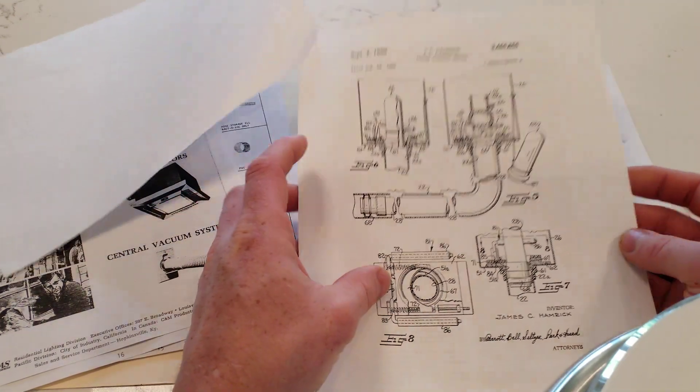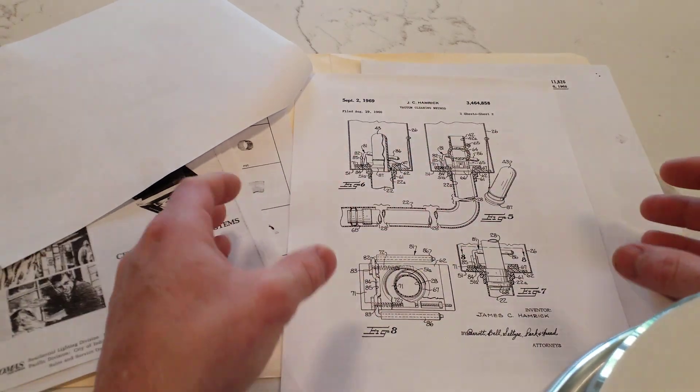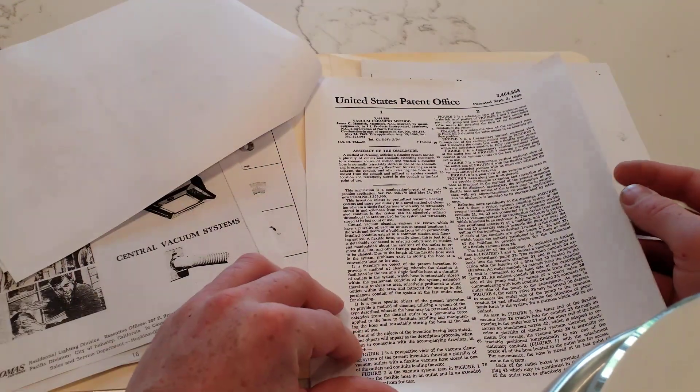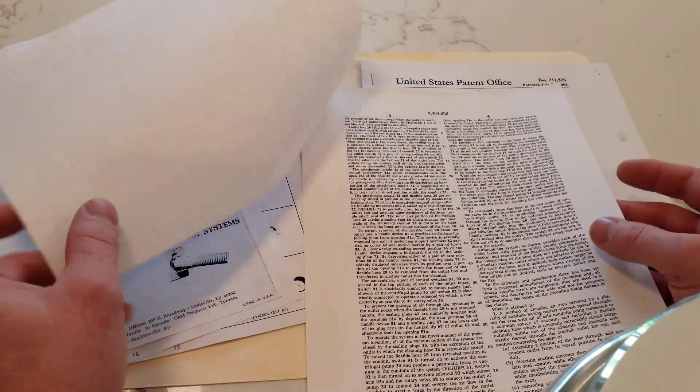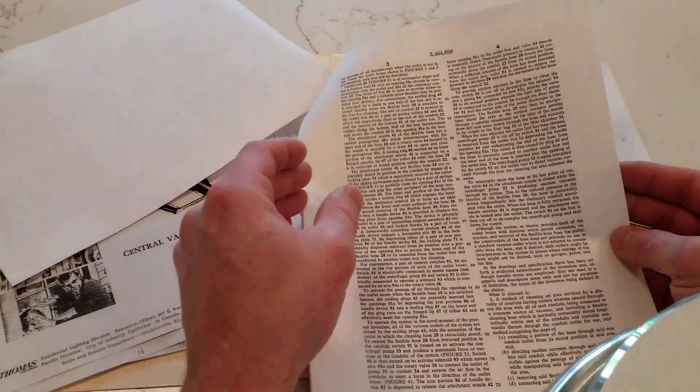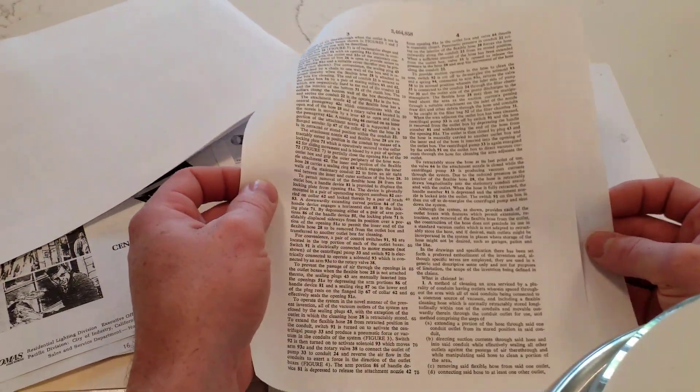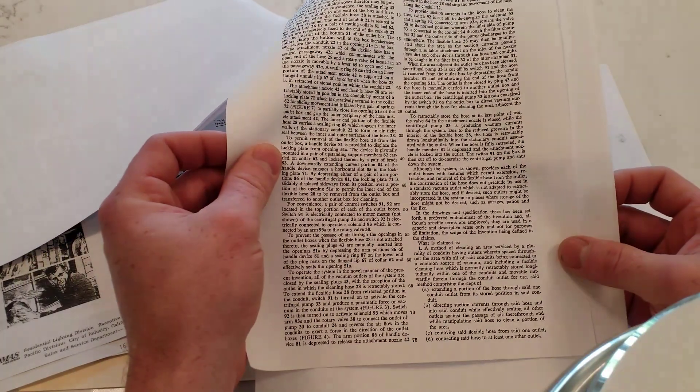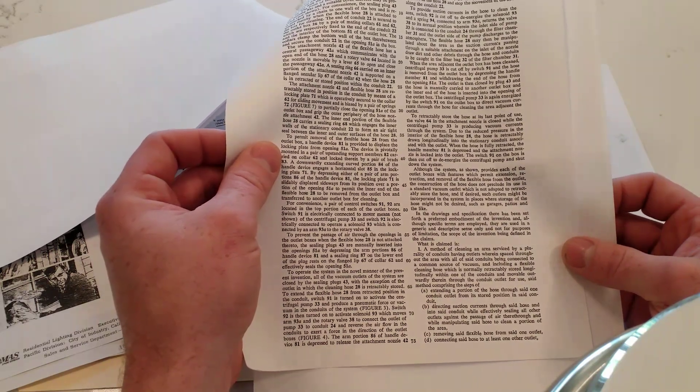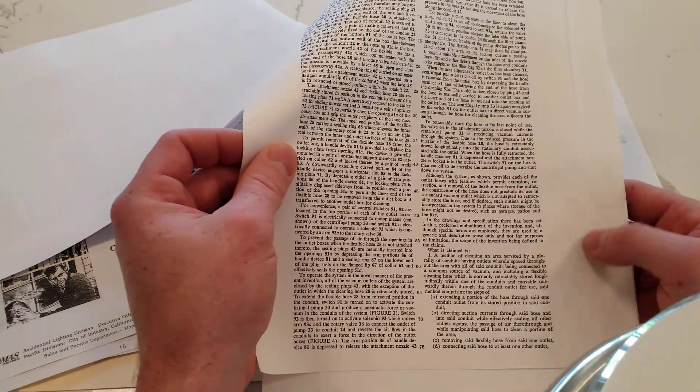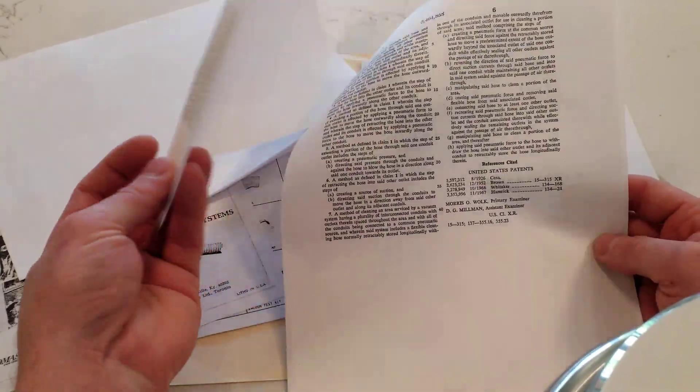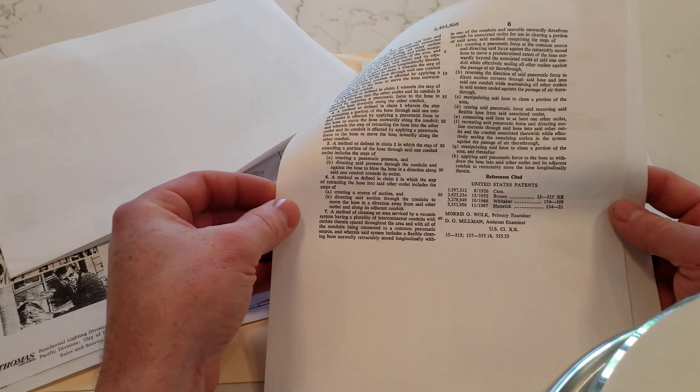And we show the innards of the valve itself. There's an early locking mechanism that's clamping down on the hose, kind of like hide a hose does. But this doesn't appear to use a rubber bladder. We're going to kind of gloss through the specifications. This is all on Google patents if you're so inclined to go down that wormhole. A method of cleaning an area serviced by a plurality of conduits, having outlets where in space throughout the area with all of said conduits being connected to a common source of vacuum, that is total patent ease.